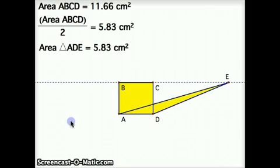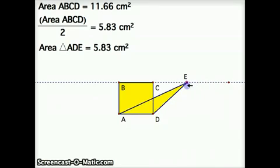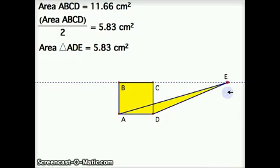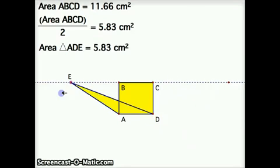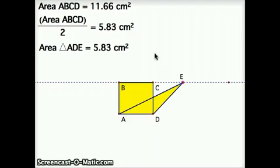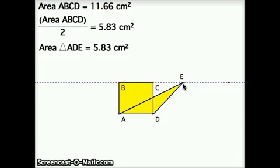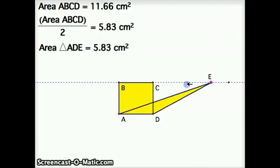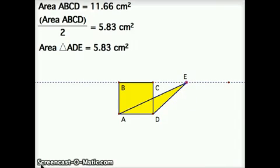The first theorem we want to be aware of is that the area of a triangle is one-half base times height, whereas the area of a parallelogram is just base times height. This means if I have a triangle that shares a base with a rectangle or any parallelogram — as I move this triangle around, the area of the rectangle is 11.66 — the triangle, being one-half base times height, has literally the same base and the same height because of the parallel line. This will come into play in the proof.